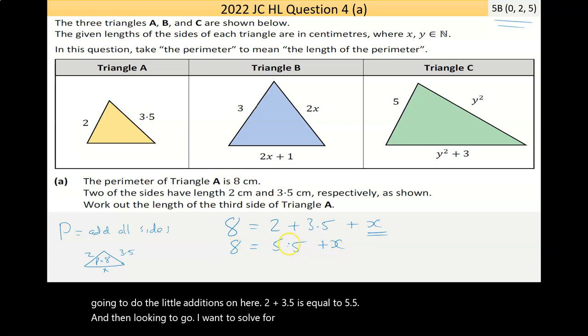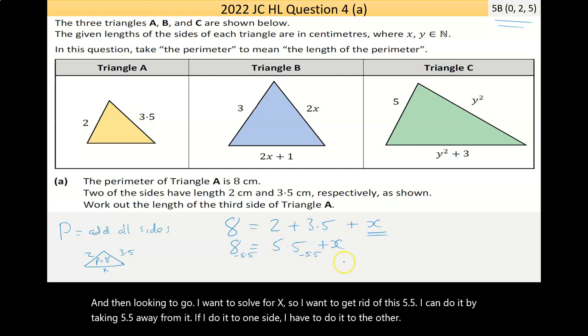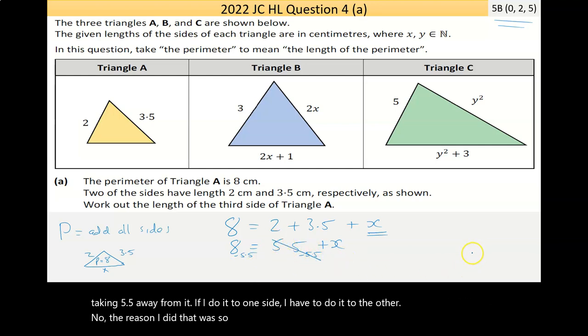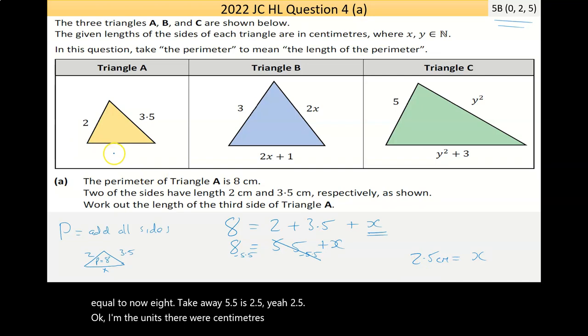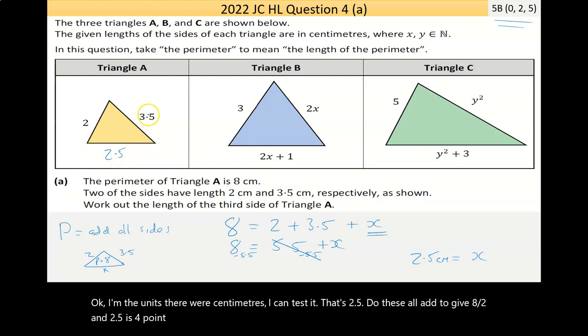Then I'm looking to solve for X. So I want to get rid of this 5.5. I can do it by taking 5.5 away from it. If I do it to one side, I have to do it to the other. These would cancel and they have. I'm left with X is equal to 8 take away 5.5 is 2.5. And the units there were centimeters. I can test it. Do these all add to give 8? 2 and 2.5 is 4.5, 4.5 and 3.5 is 8. Job done.